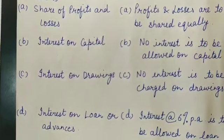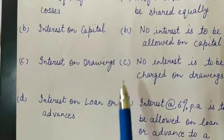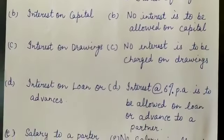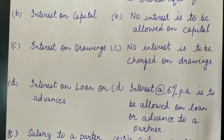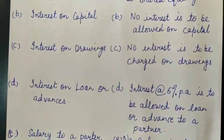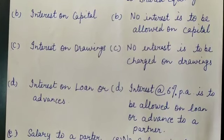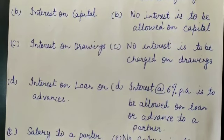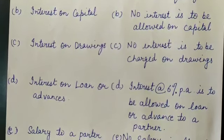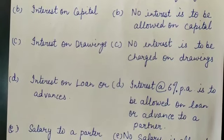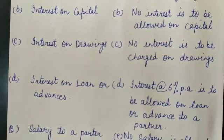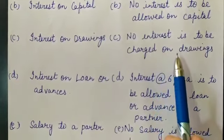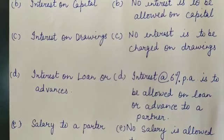Third point is interest on drawings. When a partner withdraws money or goods from business for his personal use, is called drawings. Drawings te partner dwara agreed rate naal interest pe kitta jandi hai. But agar partnership deed nahi hai ya is point de regarding deed silent hai, then no interest is to be charged on drawings.